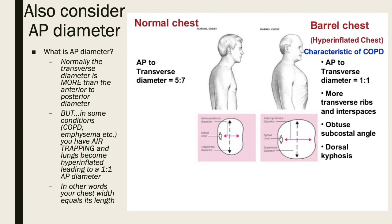We also consider the AP (anterior-posterior) diameter. In a normal patient, there's a difference between the front-to-back width versus the side-to-side width of the lungs. Patients with COPD or emphysema can have air trapping, leading to a 1:1 ratio instead of the normal 5:7, creating what's called a barrel chest — hyperinflation. If you see a barrel chest, that tells you the patient may have more problems with respiratory equipment or getting weaned off the ventilator.